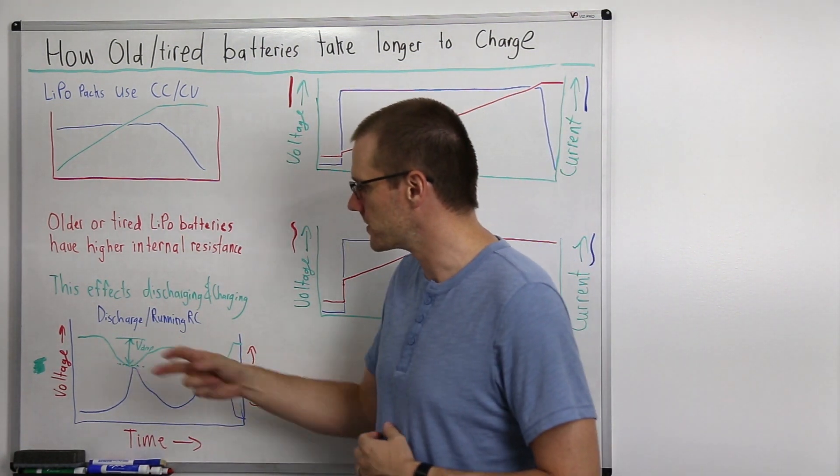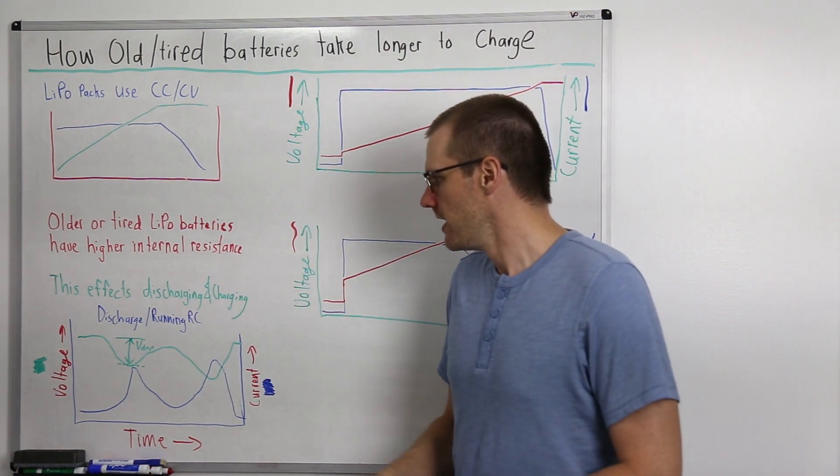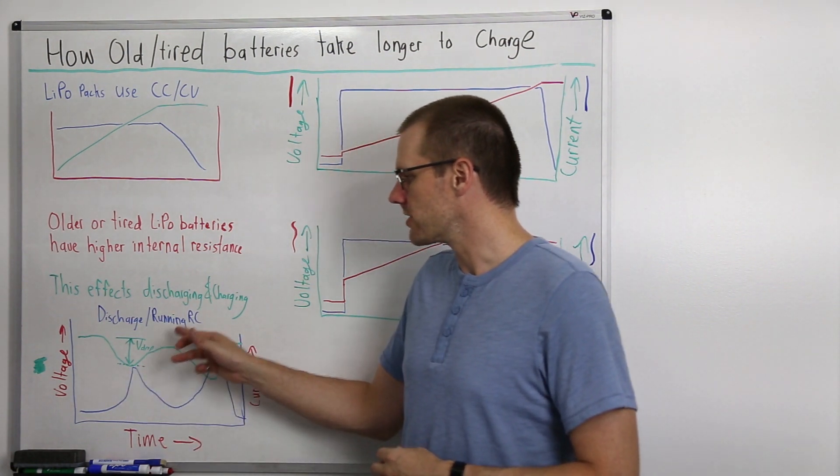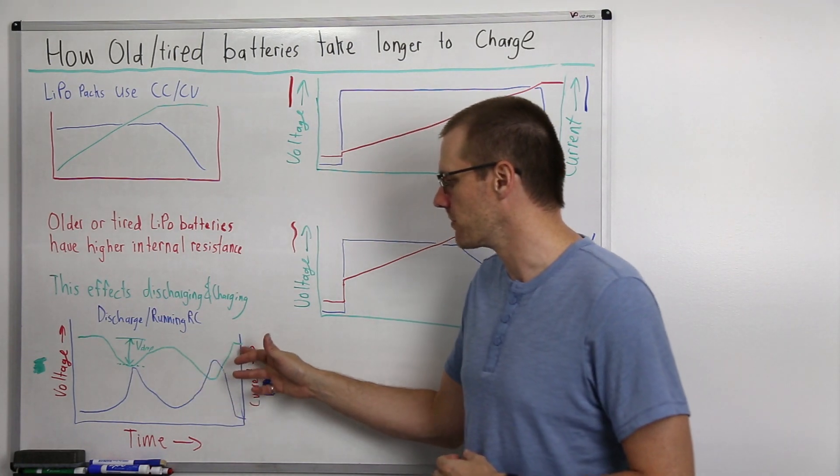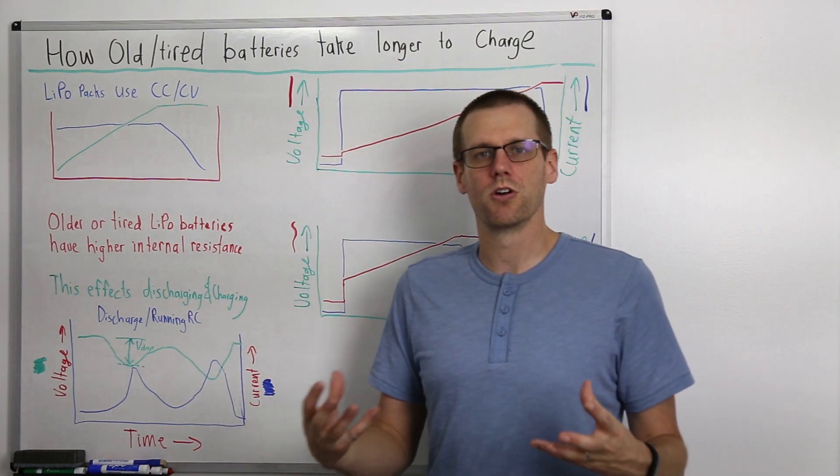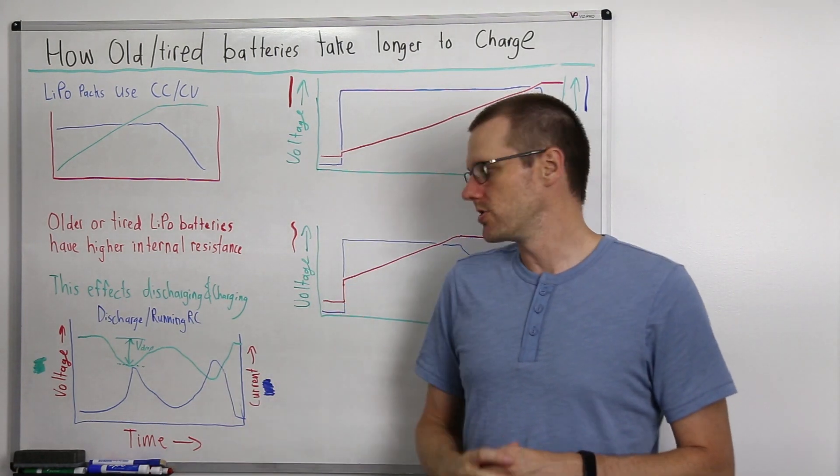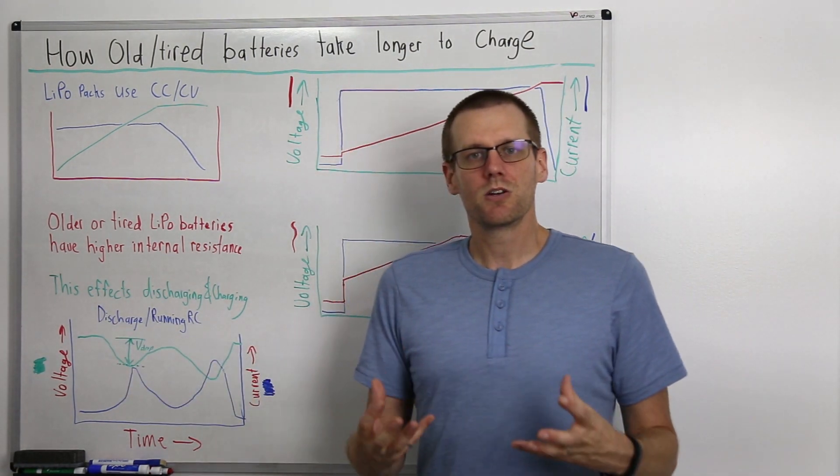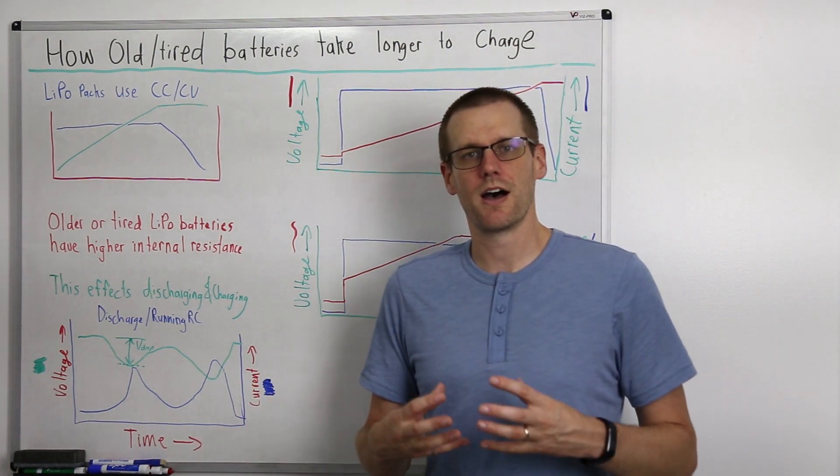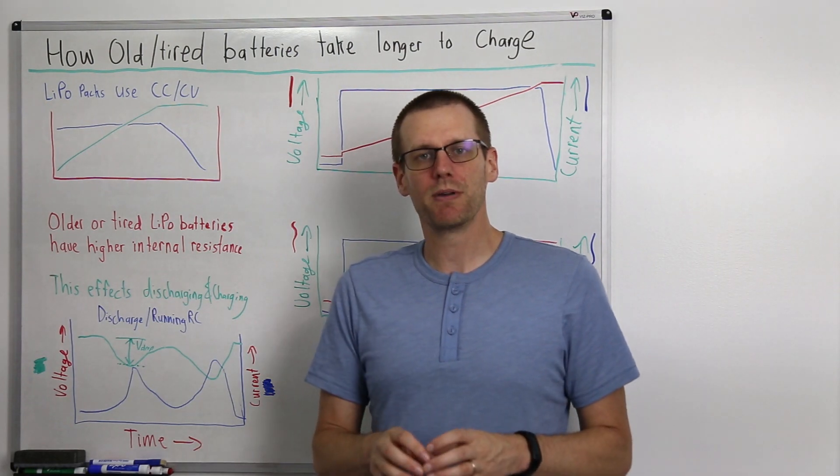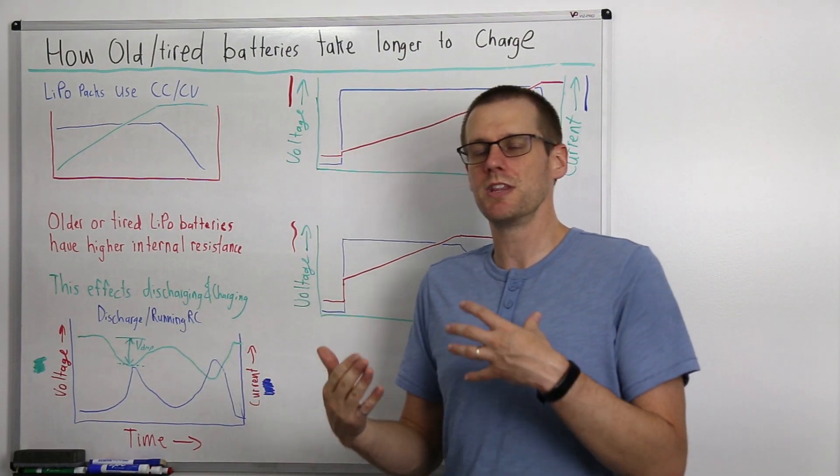As we back off, the voltage starts to go up because we're reducing the load for that battery pack. The big point is we're seeing a voltage drop occur over the battery pack such that we get less voltage to the motor when demanding a higher amount of current. The same thing happens when we're charging our batteries, except it's going to be the inverse.